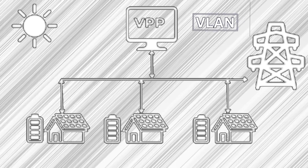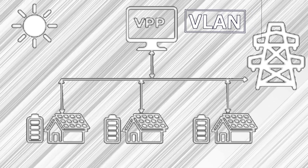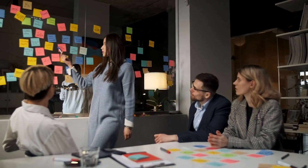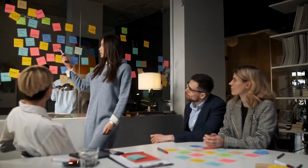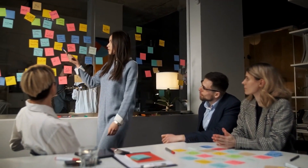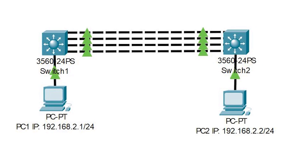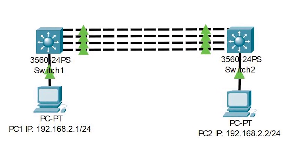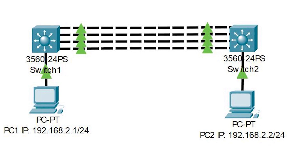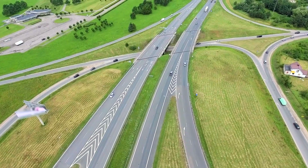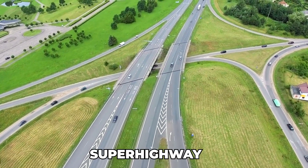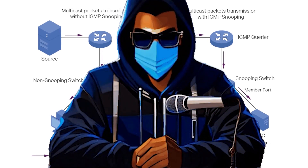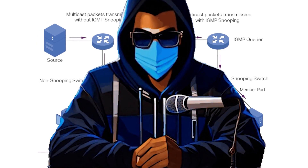VTP, or VLAN Trunking Protocol, manages VLAN configurations across switches — like a city planner coordinating different neighborhoods. But if someone gains access, they can reconfigure your network's layout to their advantage. LACP, or Link Aggregation Control Protocol, bundles multiple network connections into a single logical link for increased bandwidth — like combining multiple lanes into a superhighway. Misconfigurations can lead to traffic being misrouted or dropped.